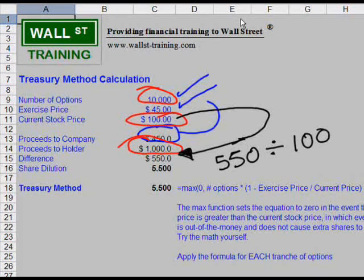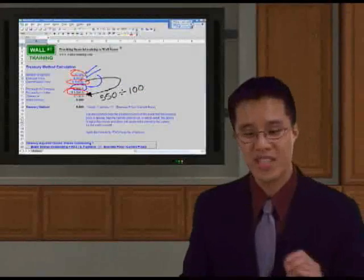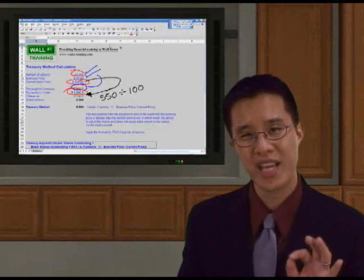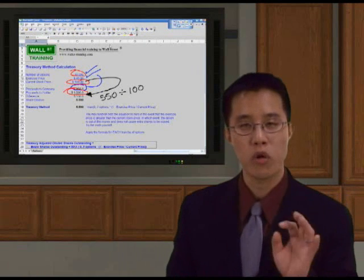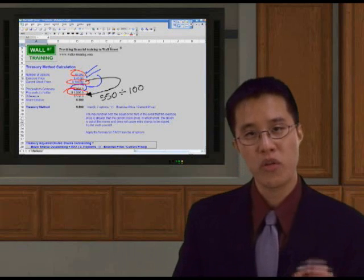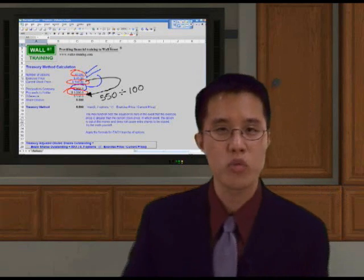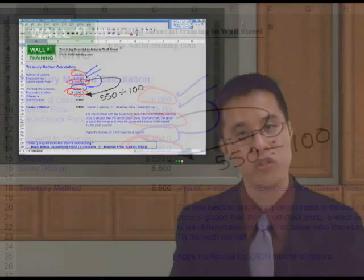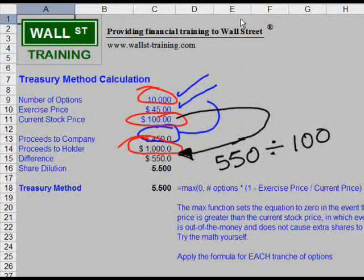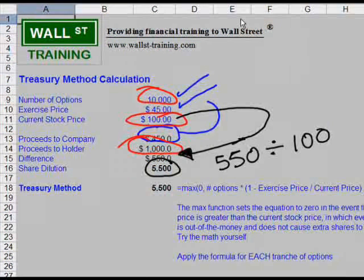In other words, you take the $550 divided by the $100 and you will get a total of 5.5 shares. Now, in theory, to reiterate this, the management team should be indifferent between receiving $550 of cash or 5.5 shares, which are worth $100 each. Because, in theory, they are both equivalent, assuming the $100 stays at $100. So therefore, the shared dilution, the assumed dilution is 5.5 shares in this particular example.